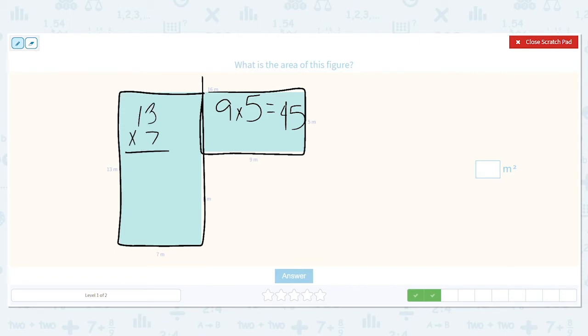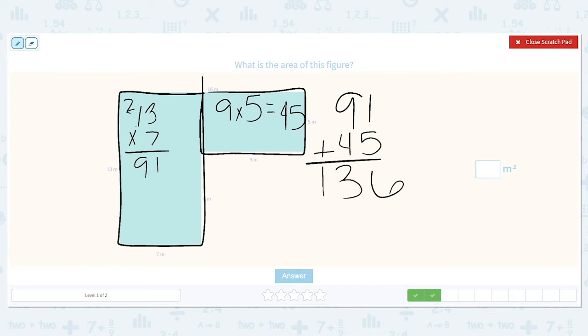Yes, it's larger, but that's okay. It's still easier than trying to figure it out all at once. So 3 times 7 is 21, carry the 2, 7 times 1 is 7, plus 2 more is 9. So now I add 91 plus 45, and I get 136 meters squared.